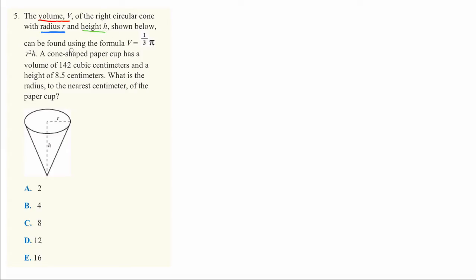can be found using the formula V equals one-third pi R squared H. Now that we know how to find the volume given the height and radius, they ask about a cone-shaped paper cup, like a Dixie cup,